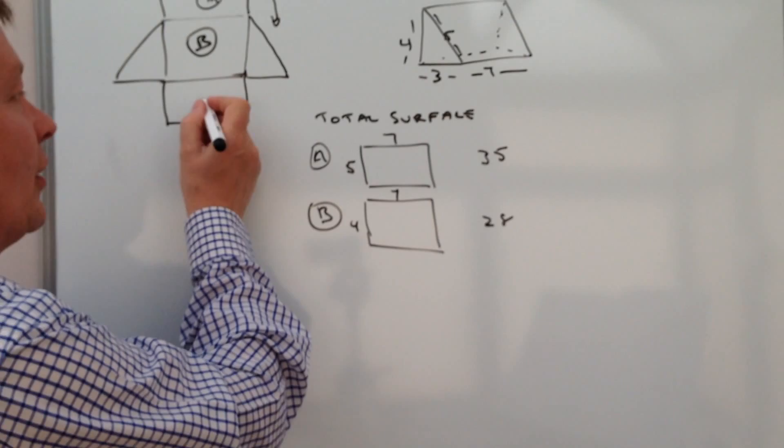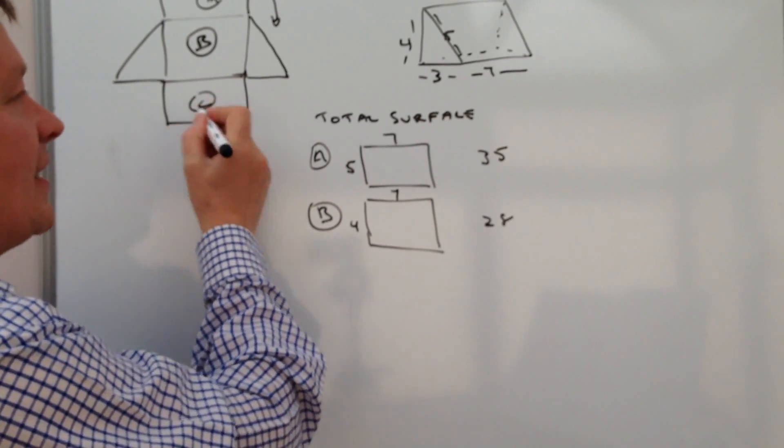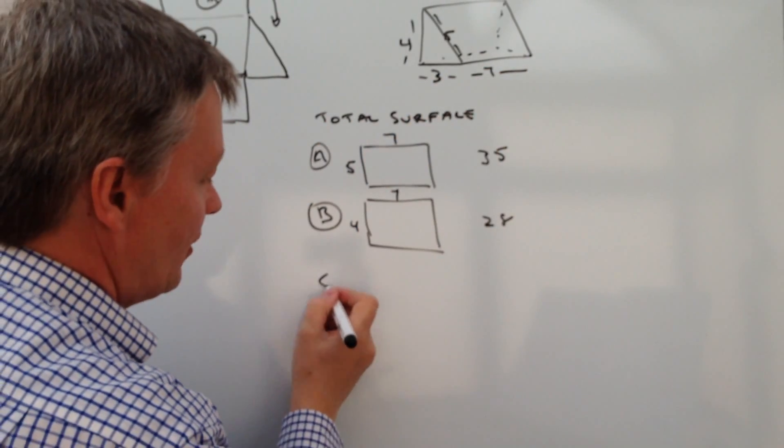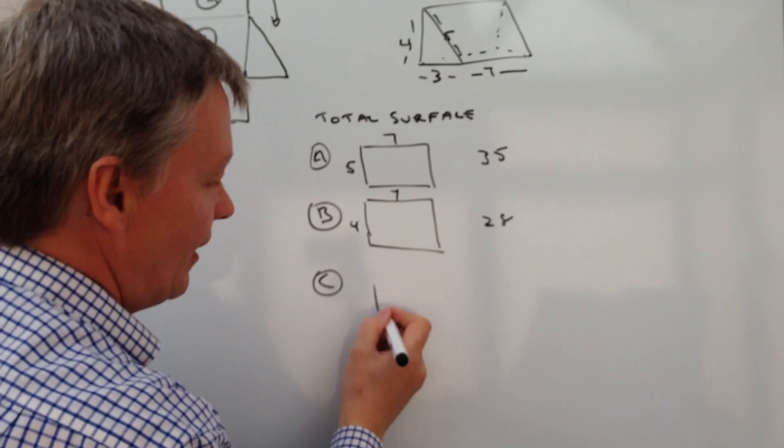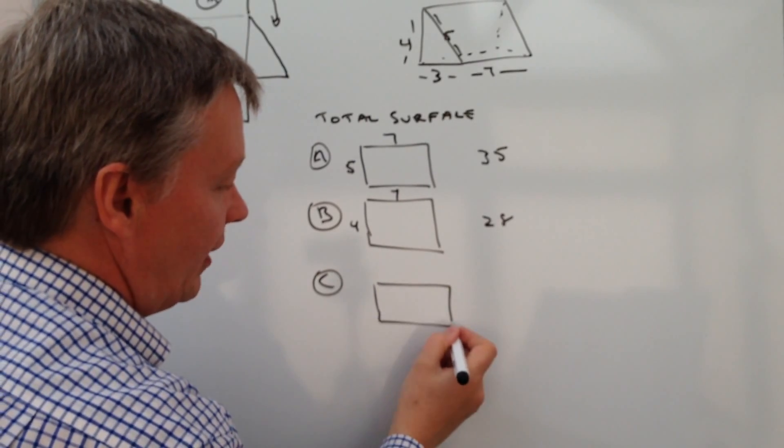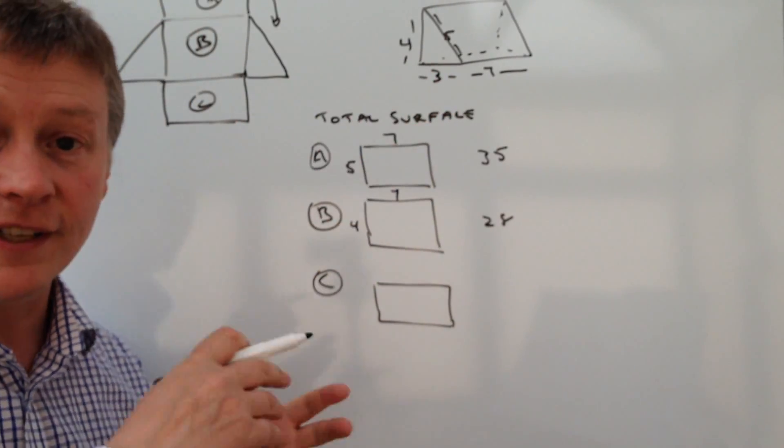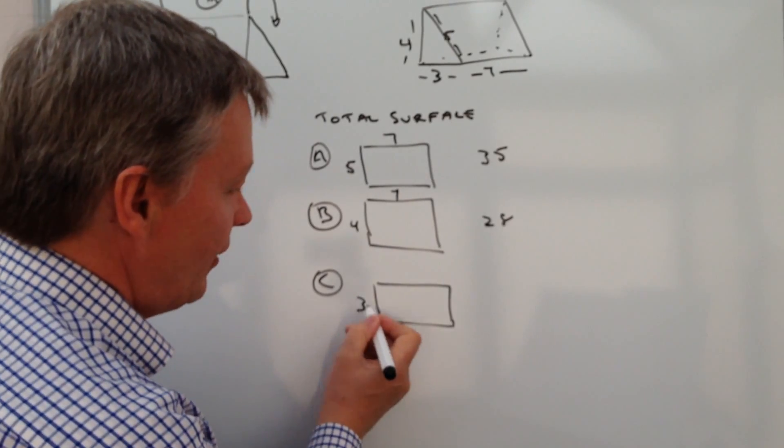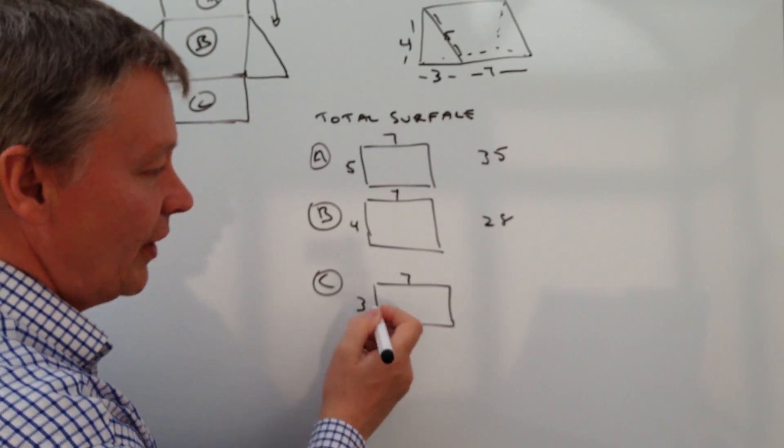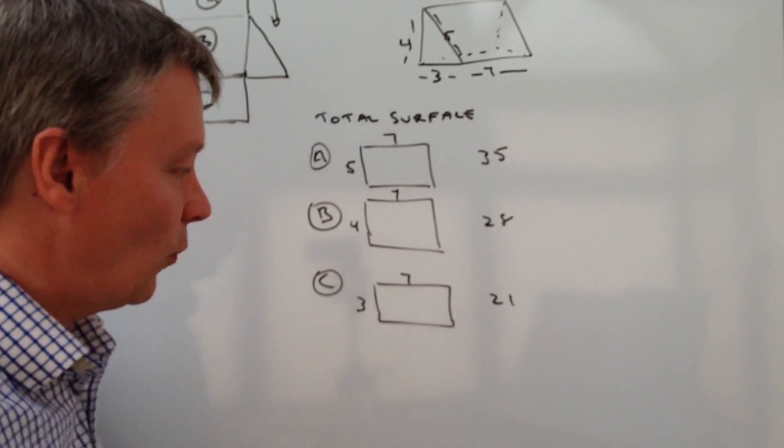So the bottom flap, which we're going to call C, is the base of the unit. Now, again, if we look at the diagram, we can see it's three centimeters in depth. So it's three there and seven again. So three times seven is 21.